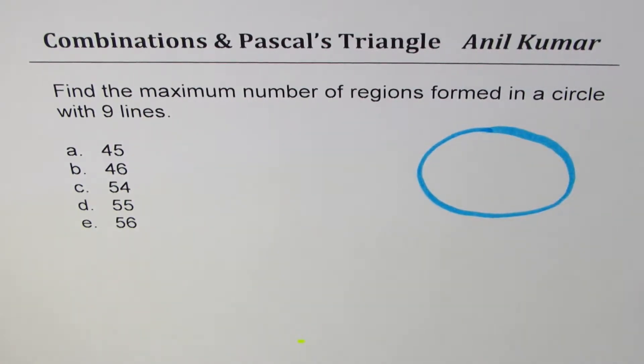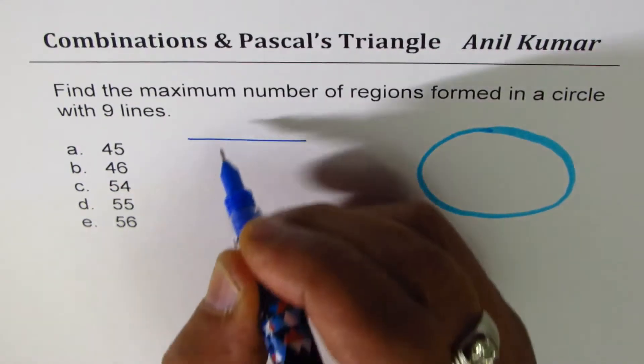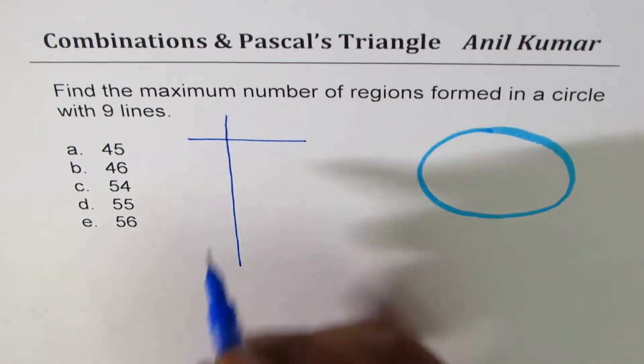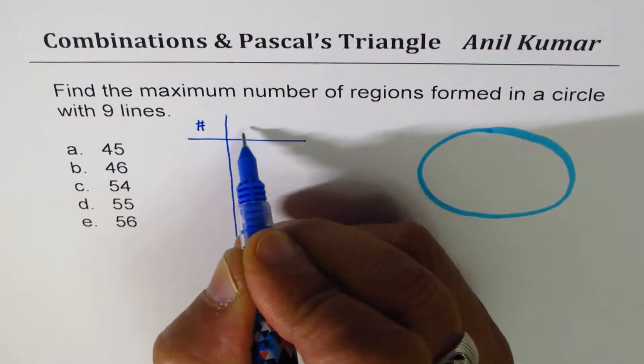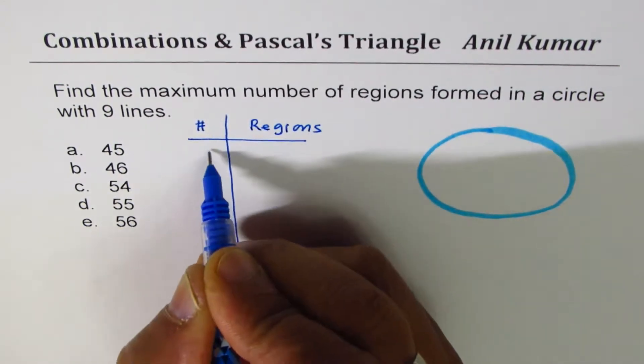If we do not draw any line, how many regions are there? What you could do is make a kind of table and work it out. Number of lines and number of regions.